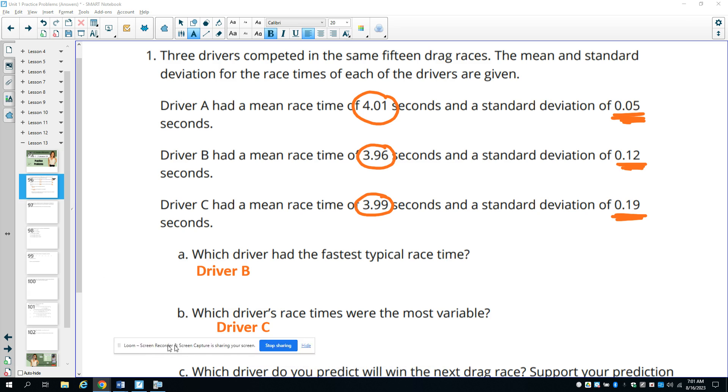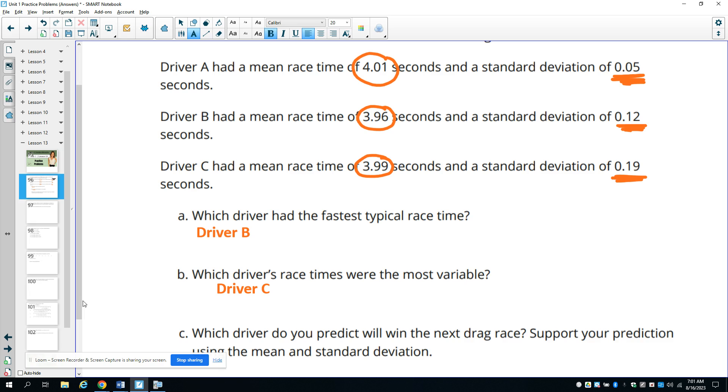Then part C gets into asking us who do we think is going to win the next drag race? And then they just want us to support our answer. So I want you to understand that the answer to this question is ambiguous, meaning there isn't one correct answer here. It's your prediction of who will win. So you want to look at this data and make a prediction and then just support your answer.